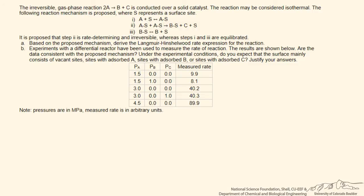This problem involves determining a Langmuir-Hinshelwood mechanism and then testing that mechanism for agreement with experimental data using a differential reactor. We'll start by setting up the Langmuir-Hinshelwood problem step-by-step. In part A, we develop a proposed mechanism with step two identified as the rate determining step.